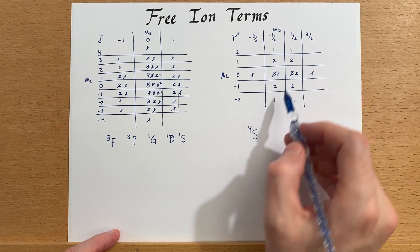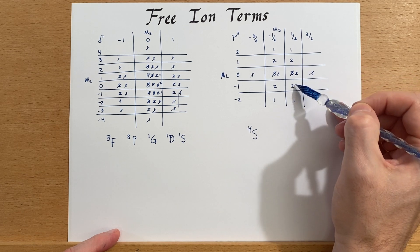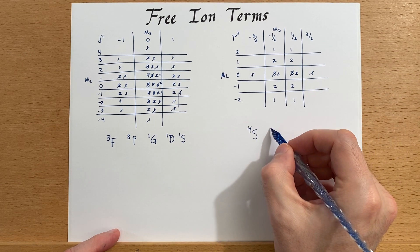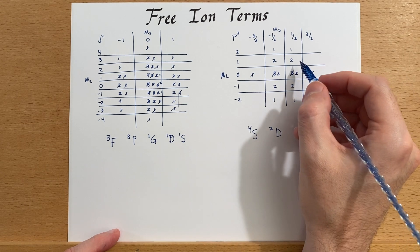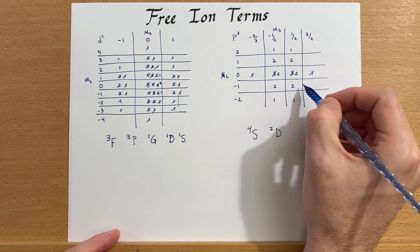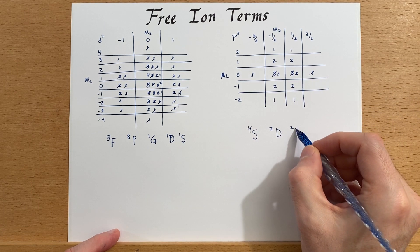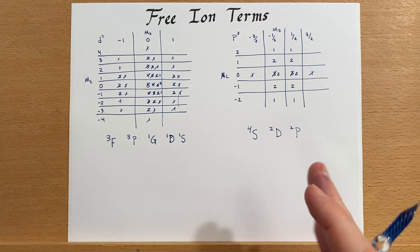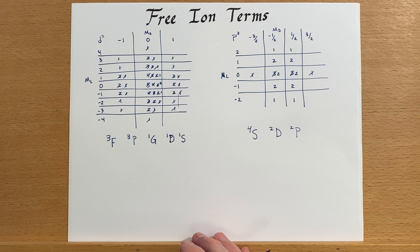Next, we have something that is two wide and one, two, three, four, five tall. So doublet D. And then we'll have one that is two wide and three tall. So doublet P. So there's the free ion terms. And we get those from the microstates that we determined before.